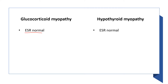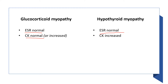As I said before, glucocorticoid myopathy and hypothyroid myopathy are both associated with normal ESR. Glucocorticoid myopathy is associated with normal creatine kinase, but hypothyroid myopathy is associated with increased creatine kinase, which is really important for Step 2 purposes.